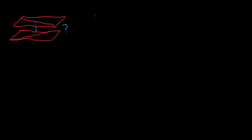So what's the distance? Well, let's say we're given the equations of the two lines in this form: P1 plus T times the direction vector of line one, and line two is the position vector P2 plus T times the direction vector of the second line. And they have the following direction vectors D1 and D2.